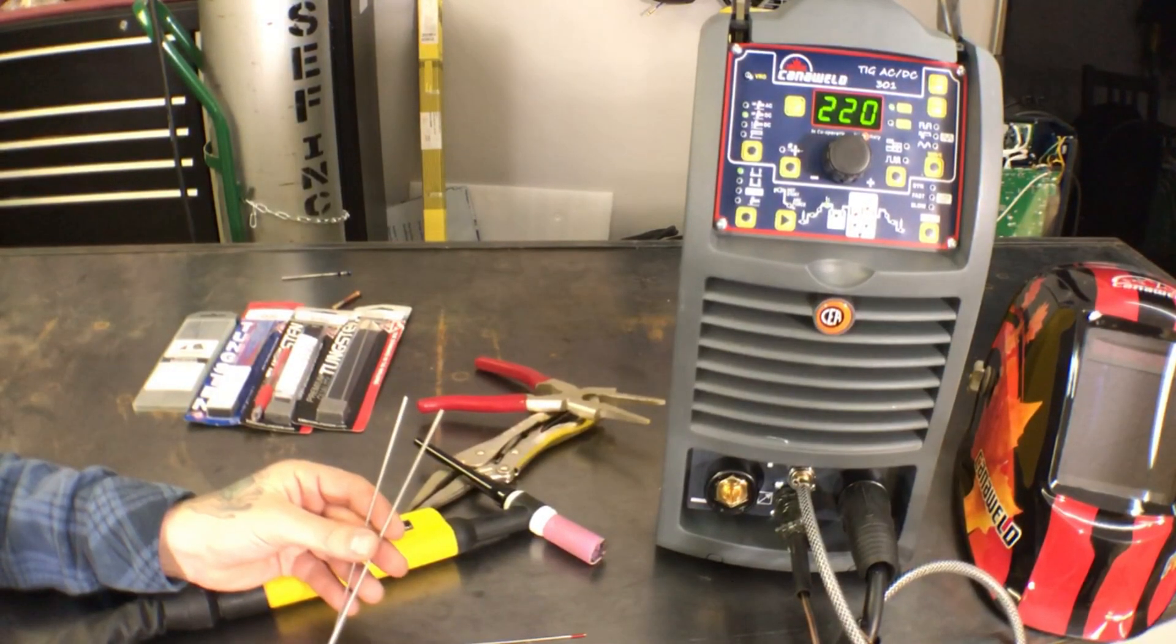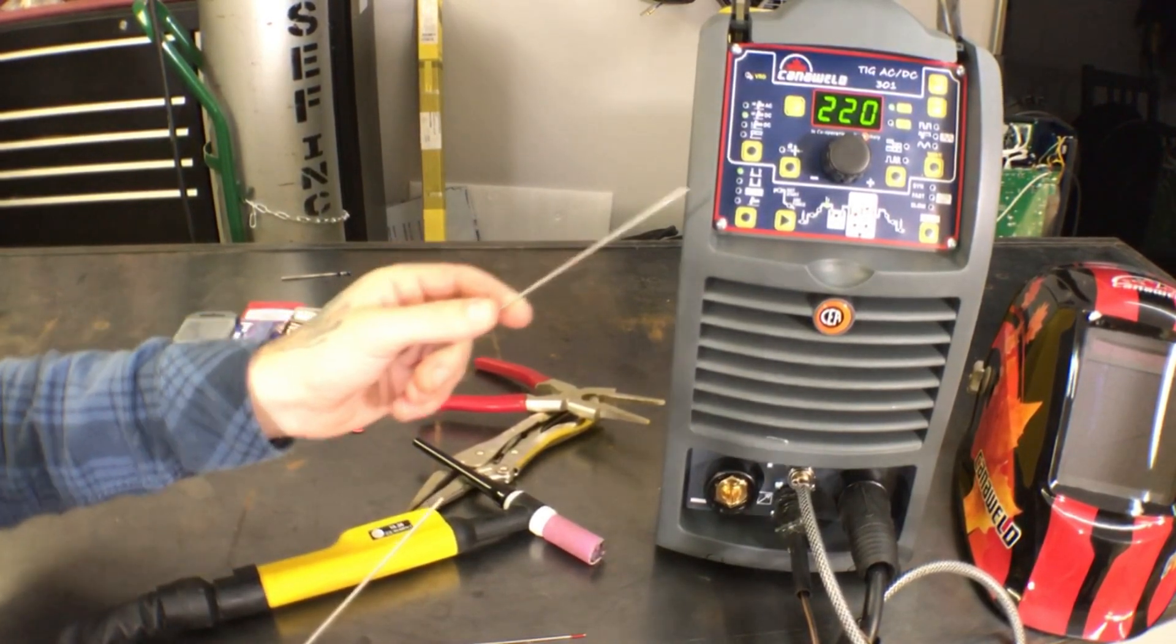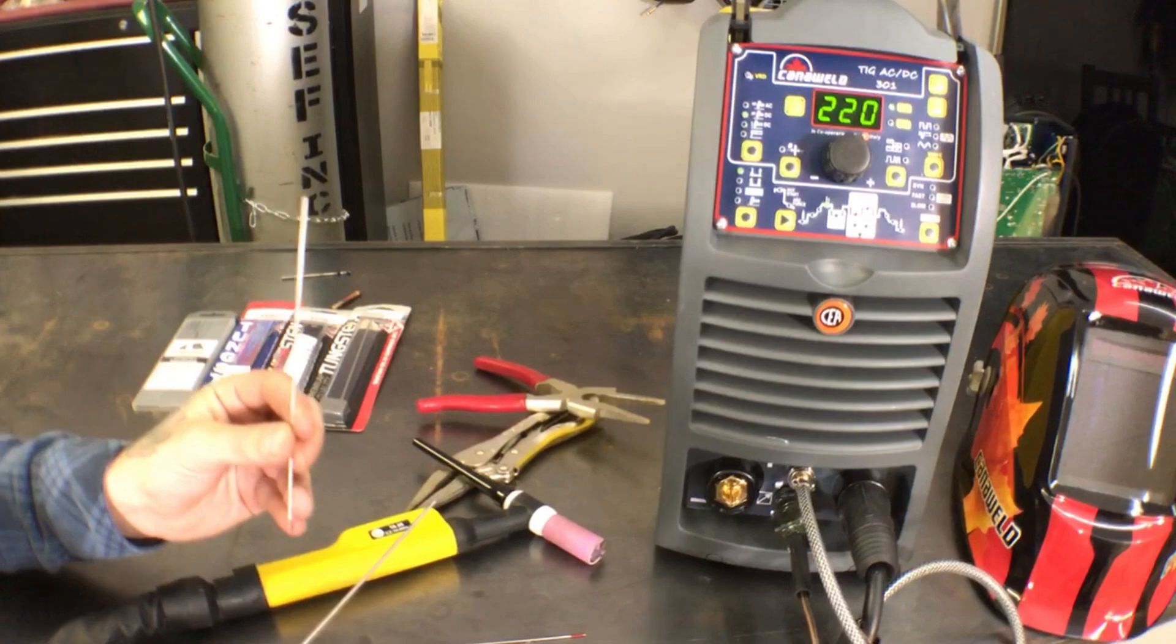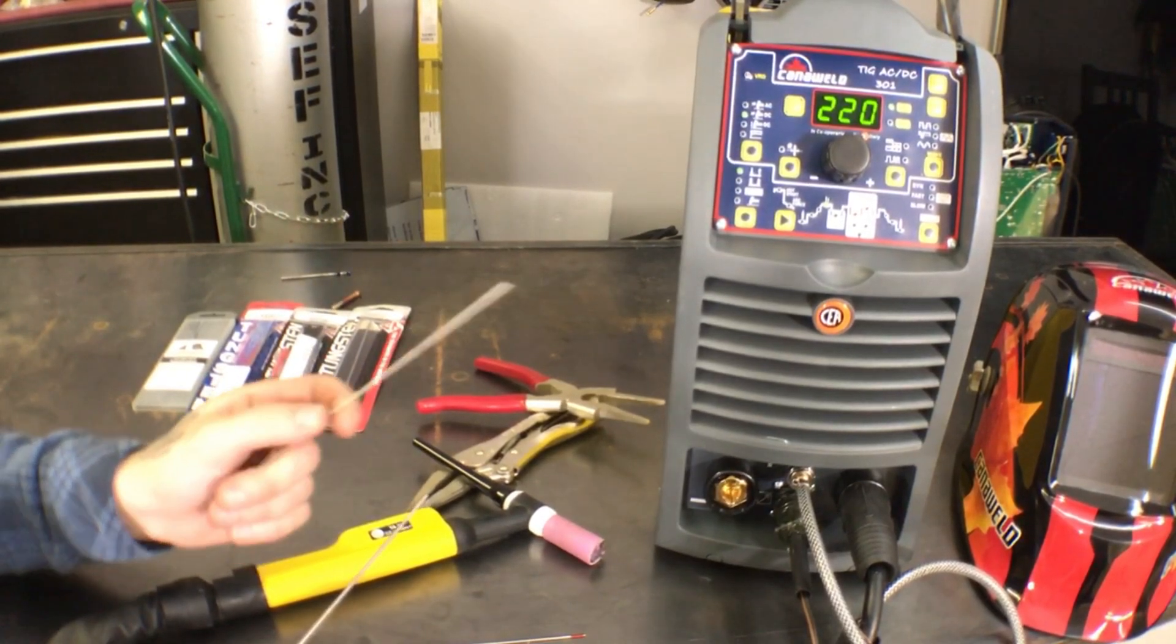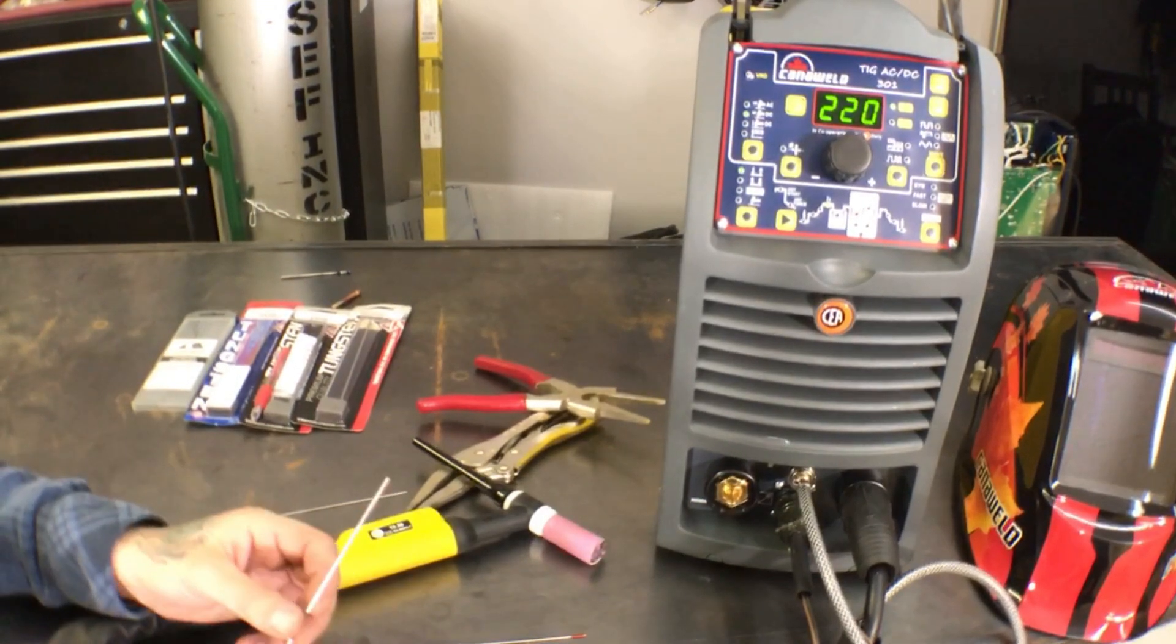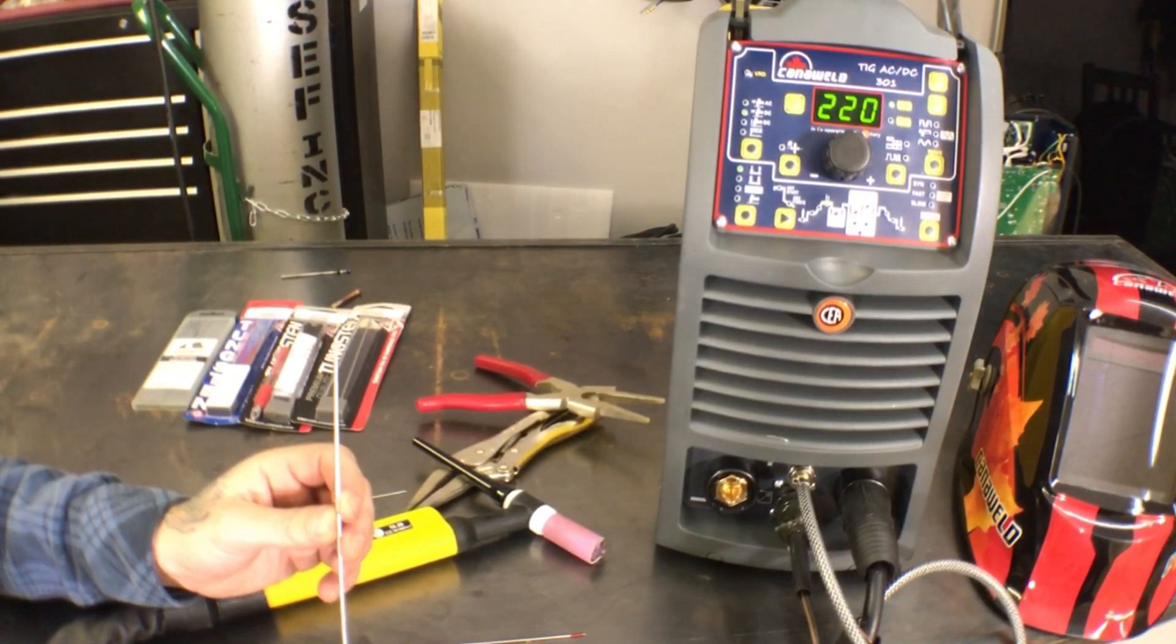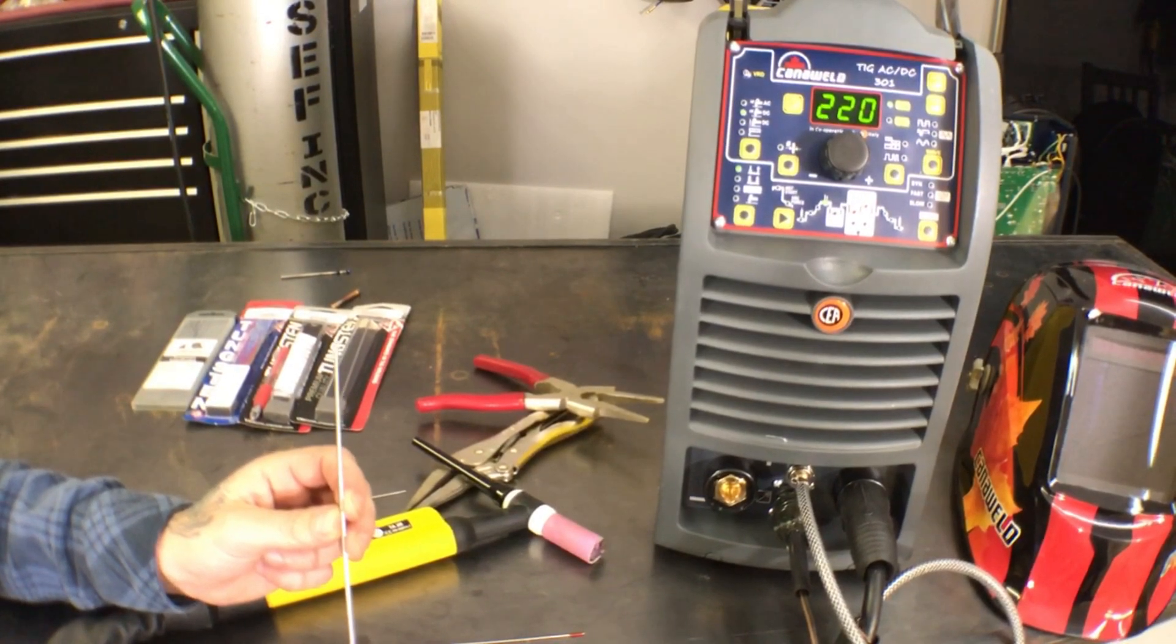Another reason your tungstens may be burning away too quickly is that you're using too small a tungsten for the amperage you're currently using. In this hand, I have a 1/16th tungsten, which is actually no good for doing anything over 220 amps. If you're going to be welding over 220 amps, you need to step up to the 3/32nd style tungsten, which is a bit fatter, and it's not going to burn away on you when you're using those higher amperages.